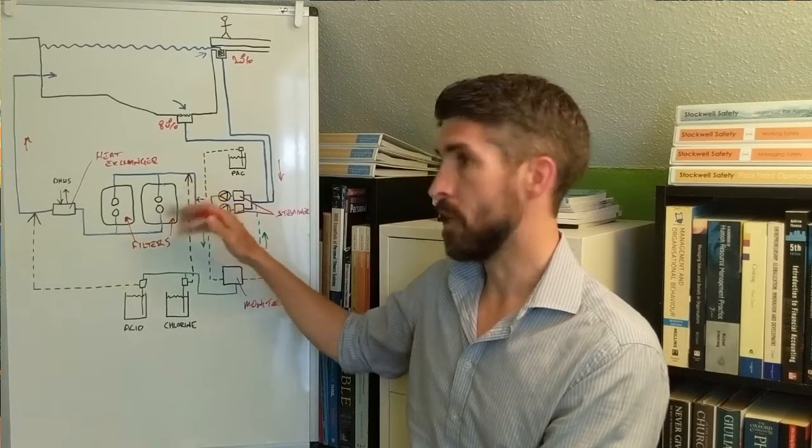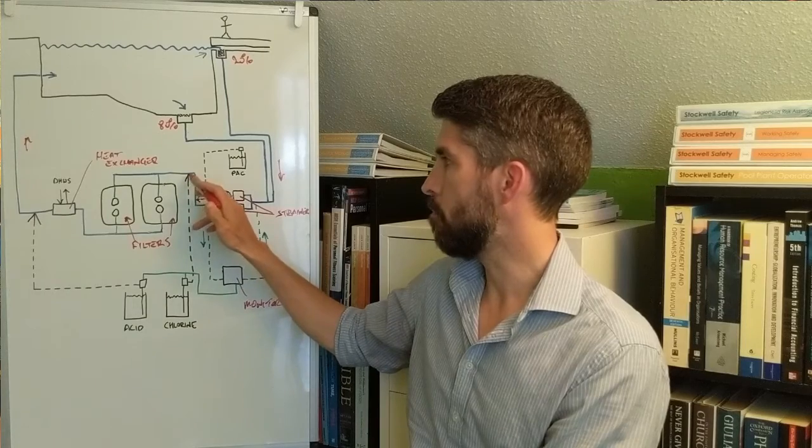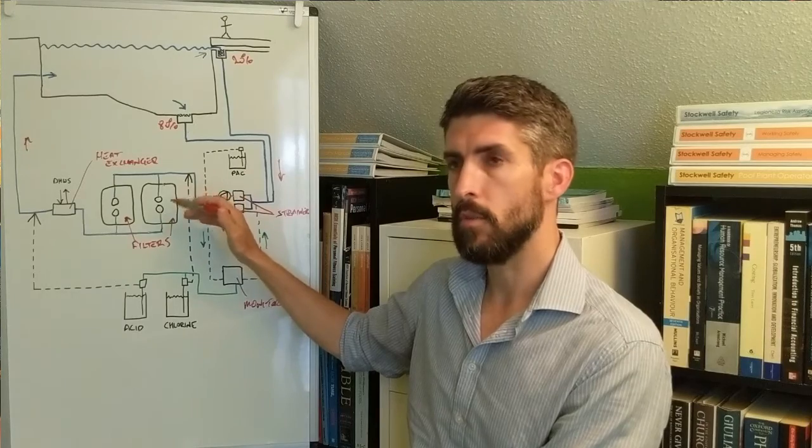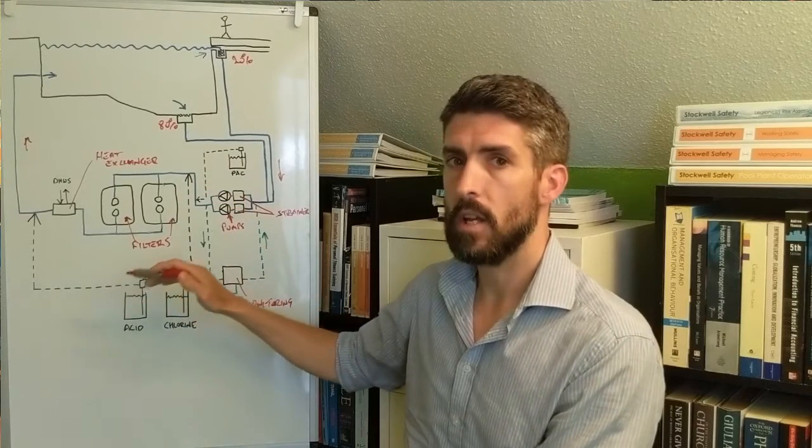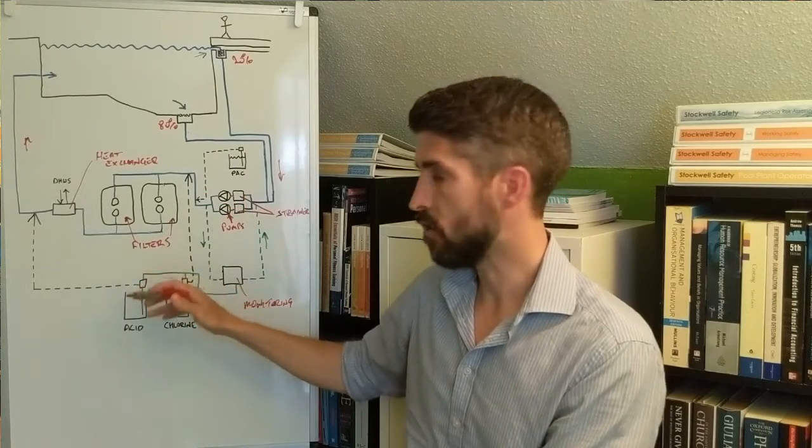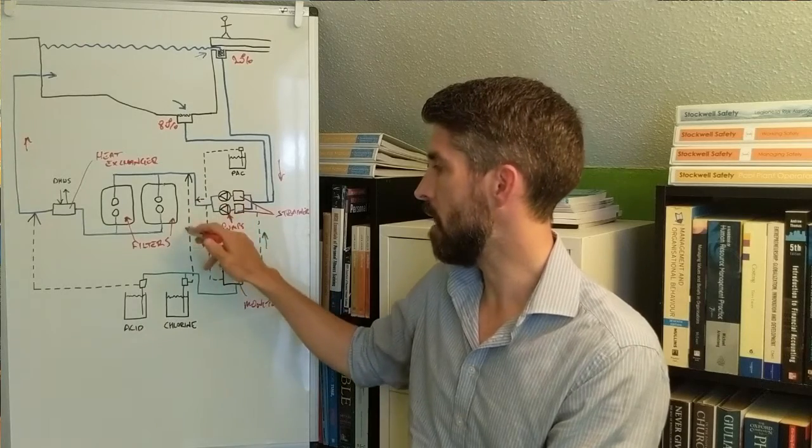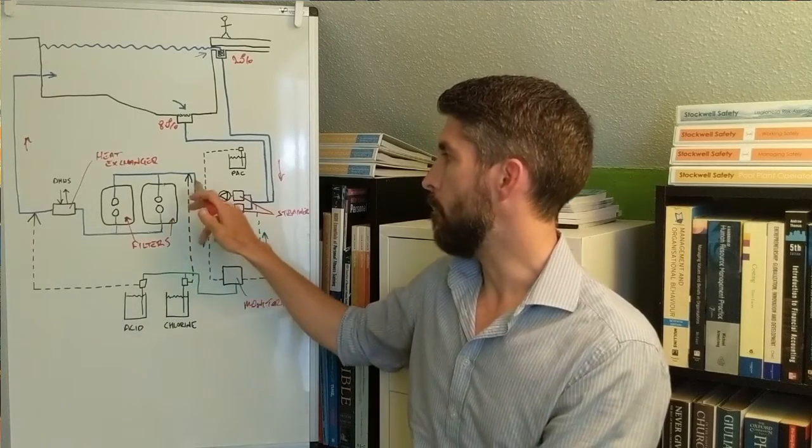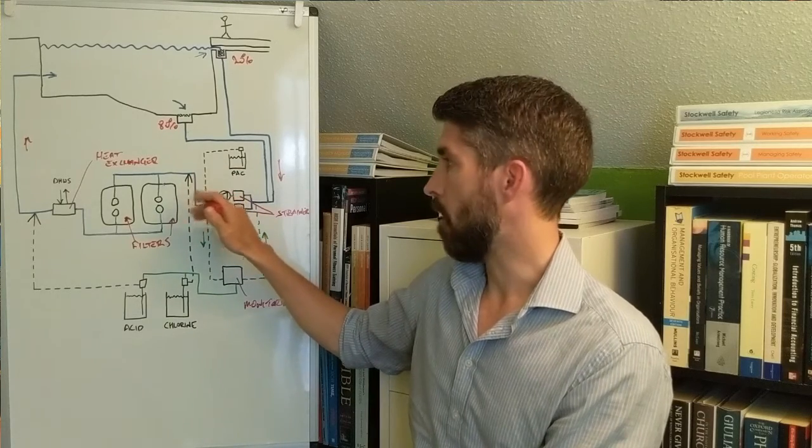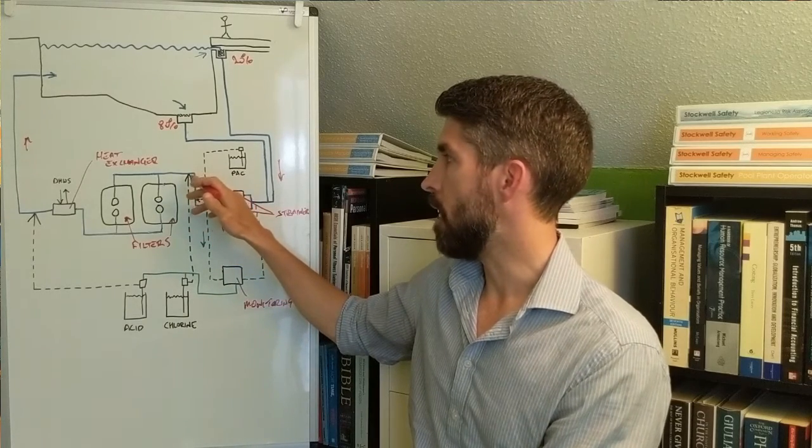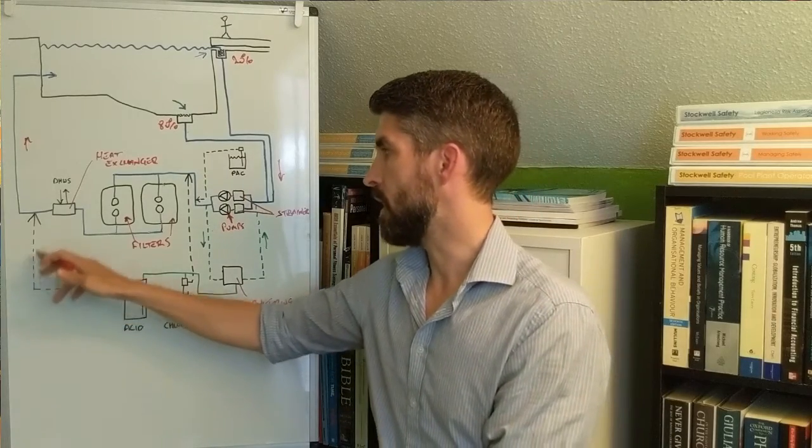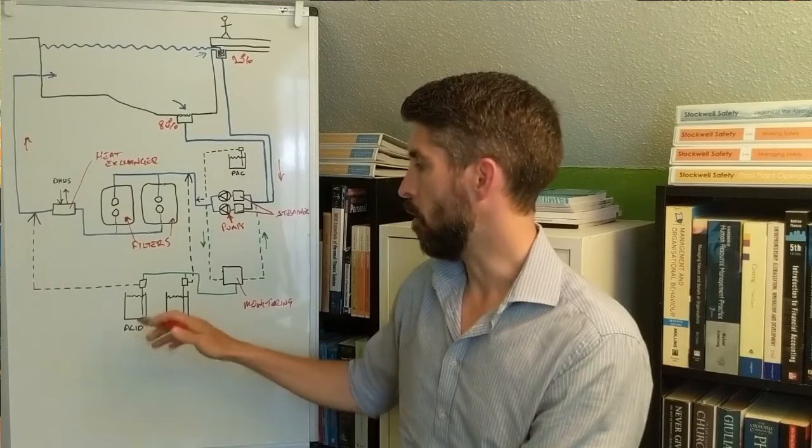The chlorine here on this particular example is being dosed pre-filter. That's not always the case. In some plant rooms you might find the chlorine being dosed post-filter, downstream of the filter. So there's a bit of variability to where the chlorine is injected. But on this particular example, I've got the chlorine being dosed in before the filters.